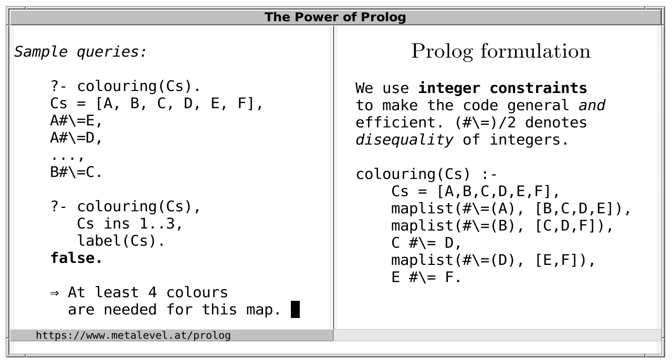So, from this interaction, we know that at least four colors are needed for this map because there is no solution with three colors and since we are using only monotonic predicates, we know that there are also no solutions for fewer than three colors. So, that's quite nice. We have used Prolog to prove that three colors are not sufficient to color this concrete map by relying on logical properties of our predicate.